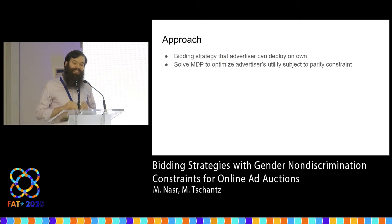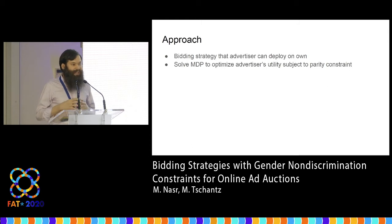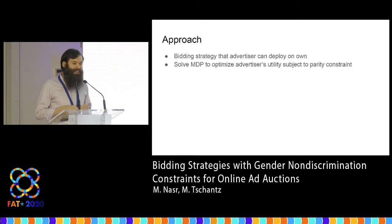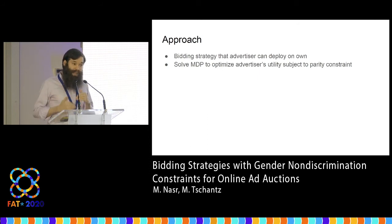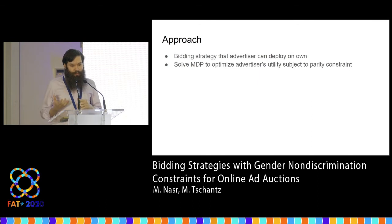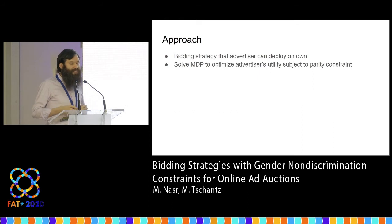Another complexity is that this bidding strategy is more complicated than the one typically used for second-price auctions. In that setting, it's optimal to just bid the immediate reward you'll receive from showing the ad to a person, without thinking about the past or future. In our case, you have to adjust bids up or down based on whether you're winning too many of one gender. For example, if you're winning too many men, you want to bid less on men and only win those cases where you get a steep discount.